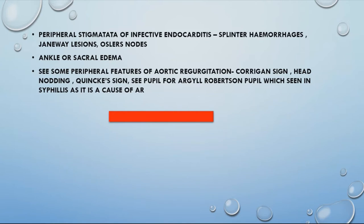Now examine peripheral features of aortic regurgitation. The Corrigan sign refers to visible carotid artery pulsation — on both sides of the neck we see the carotid artery, which is pulsatile. This is different from the JVP on the other side.